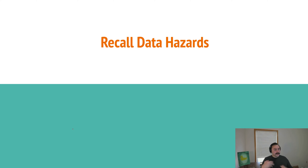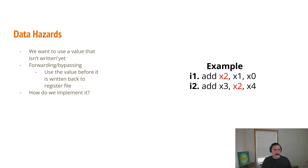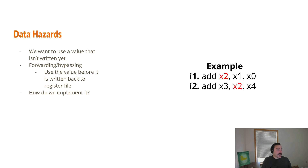What exactly about our pipeline architecture leads to data hazards? Unlike our single-cycle architecture, we have overlapping execution of instructions, and these instructions can have dependencies. A fundamental part of this is that one instruction might want to use a value that hasn't been written yet. For example, we have this simple case where our first instruction is doing an add instruction.